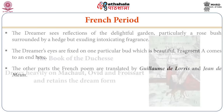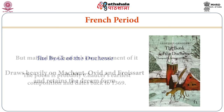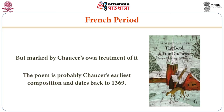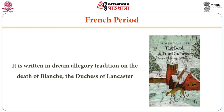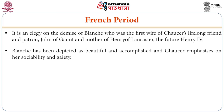The other important work belonging to this group is the Book of the Duchess, which draws heavily on Machaut, Ovid, and Froissart and remains a dream in form, but is marked by Chaucer's own treatment. The poem is probably Chaucer's earliest composition, dating back to 1369 AD. It is written in the dream allegory tradition on the death of Blanche, the Duchess of Lancaster — an elegy on the demise of Blanche, who is the first wife of Chaucer's lifelong friend and patron John of Gaunt and mother of Henry of Lancaster, the future Henry IV. Blanche has been depicted as beautiful and accomplished, and Chaucer emphasizes her sociability and gaiety.